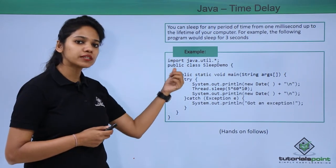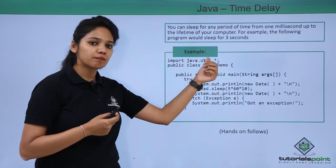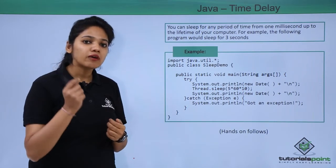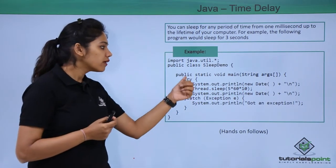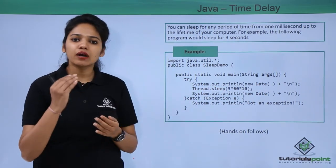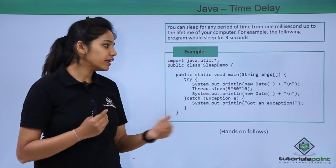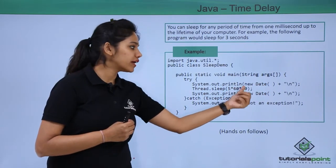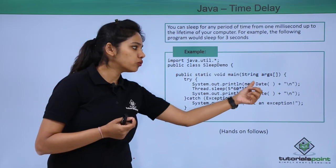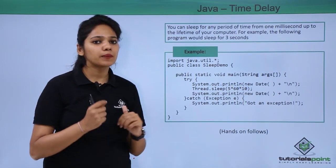We imported the package called java.util.* because the Date class is available in this package. Then we created a class called SleepDemo. In this class, we write a main method. In the main method, we write a try-catch block where in the try block, we first display the current date. We can directly provide the constructor with the help of the new keyword, creating a new object of the Date class. So you write new Date() and with the println method this will print your current date and time.